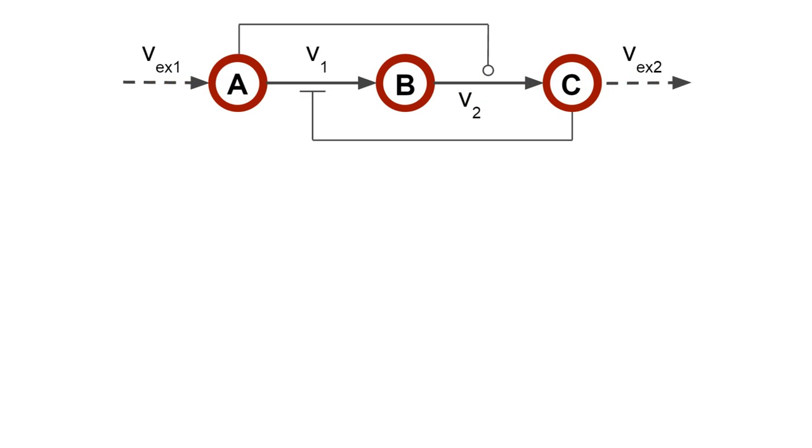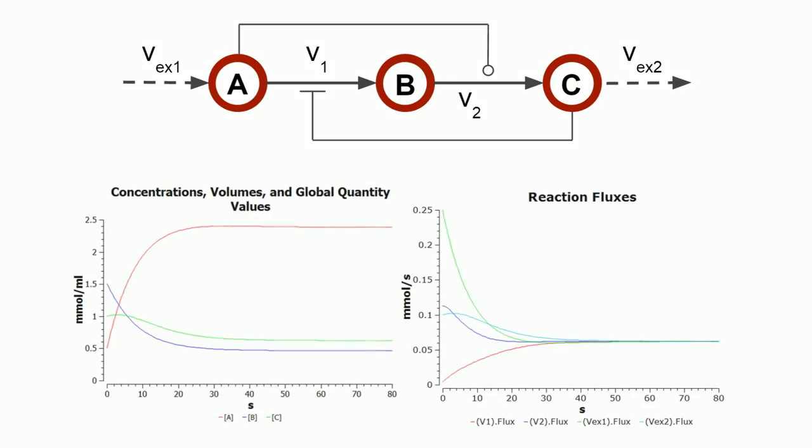Let's consider this simple biochemical network. If we let the system follow its dynamics, it will reach a steady state. These two plots, for example, show how the concentration of the different species and the fluxes of the different reactions change over time. As you can see, after an initial transient, all the variables reach a plateau and they don't change anymore. This means that the steady state is reached.